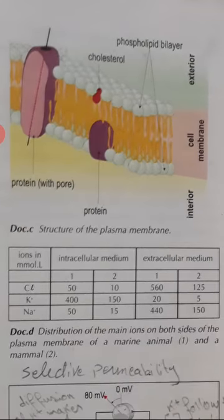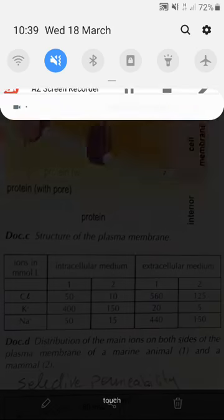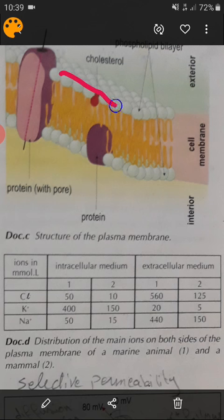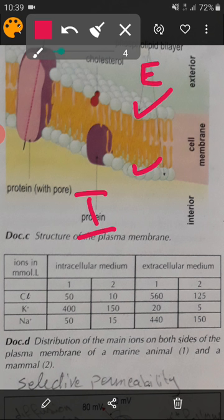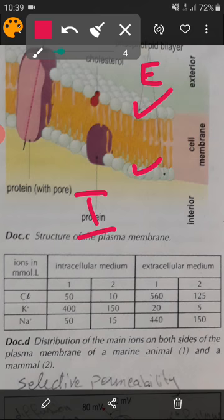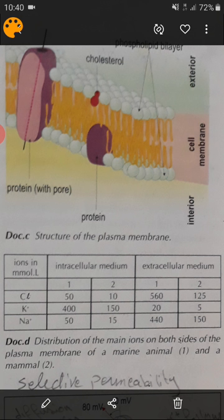The cell membrane, as you see, is made up of two layers. This is the first layer and this is the second layer. These layers are called the phospholipid bilayer. 'Bi' means two — this is the first layer and this is the second layer. This is the cell membrane — this is an enlarged section of it.